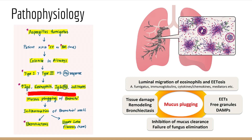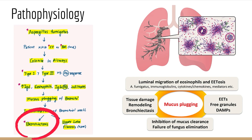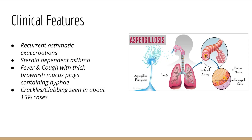This ultimately leads to increased IgE, eosinophils, IgG antibodies, and infiltrates, leading to mucus plugging of the bronchi. Because of this mucus plugging, there is inflammation of the bronchial wall, ultimately leading to the main manifestation — bronchiectasis — and tissue damage, remodeling, and very rarely upper lobe fibrosis.